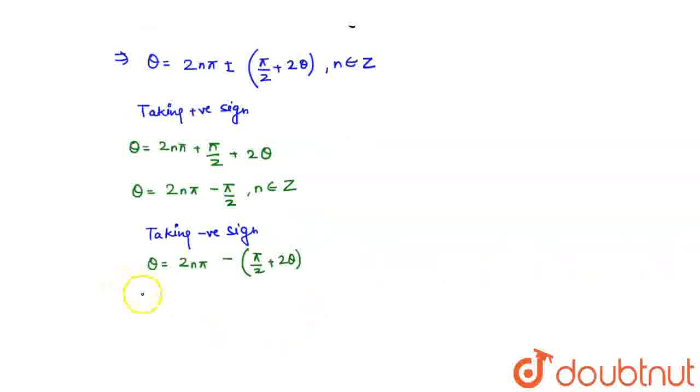So this implies theta would become 2n pi by 3 minus pi by 6 for all values of n belonging to integer Z.